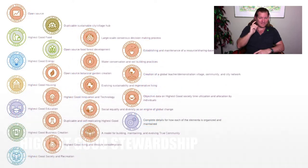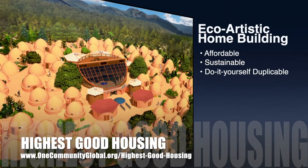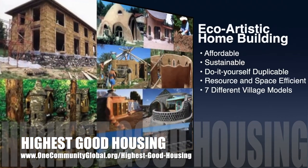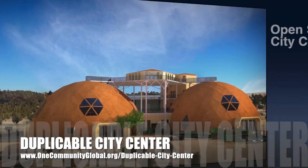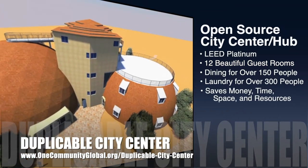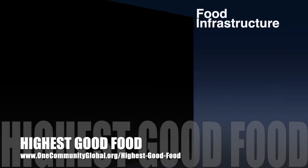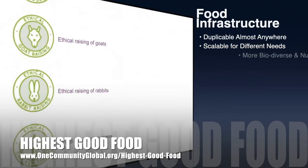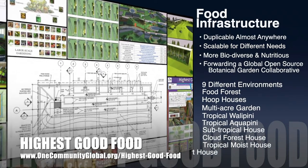The One Community approach to highest good housing is eco-artistic home building that is affordable, sustainable, do-it-yourself, duplicable, resource and space efficient, and consists of seven different sustainably constructed village models. One Community is also creating an open source duplicable city center designed to be LEED Platinum certified, provide 12 guest rooms, dining for over 150 people, and laundry and recreation space for over 300 people — all while saving money, time, space, and resources. The highest good food approach is duplicable almost anywhere, scalable, more biodiverse and nutritious, and includes nine different free shared growing environments.